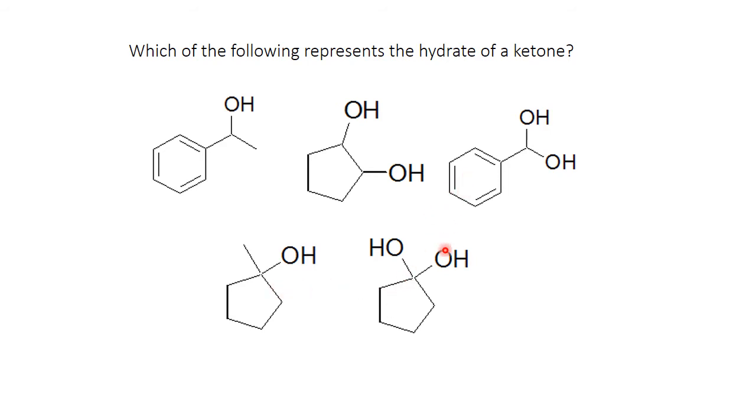The only two possible are these. If I look at this one, you would see this would form a carbonyl on the end of a chain. So this is from an aldehyde. So this is a hydrate of an aldehyde. This one would give you a carbonyl in the middle of a chain with a carbon on either side. So this is the hydrate of a ketone.